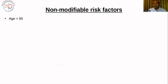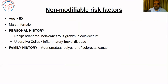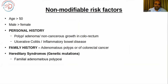There are a lot of non-modifiable risk factors when it comes to large intestine cancer. This is where it differs from liver or gallbladder cancer, where the non-modifiable risk factors are only age and gender. Here, personal history and family history are very important and essentially non-modifiable. If you have a personal history of polyp adenoma or a non-cancerous growth in the colorectum, ulcerative colitis or inflammatory bowel disease, or a family history of hereditary syndromes, adenomatous polyps, or colorectal cancer — these personal history, family history, and genetic mutations become non-modifiable risk factors.